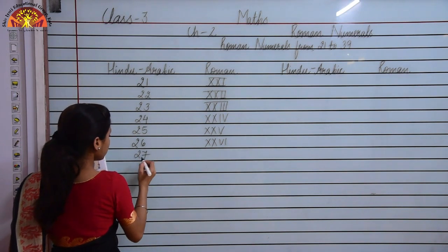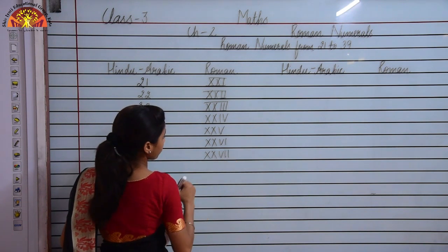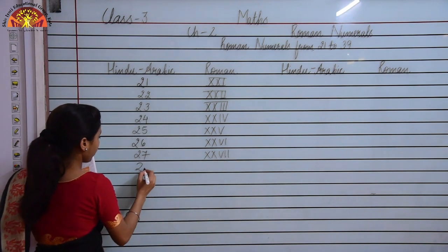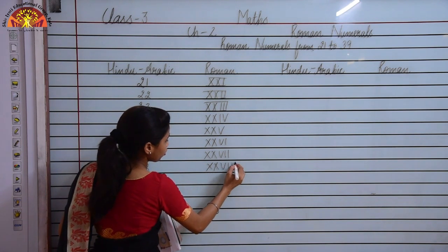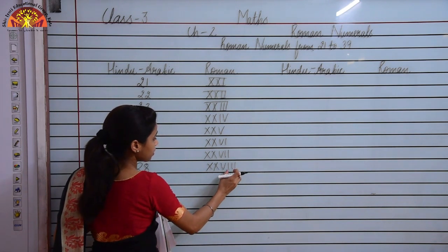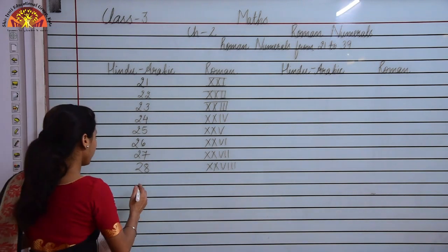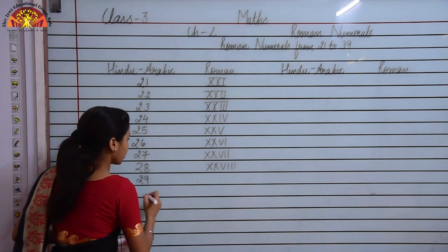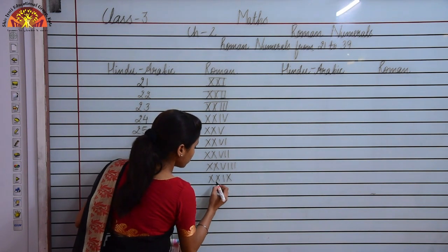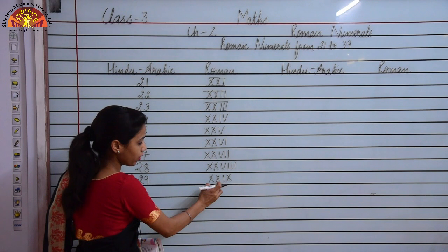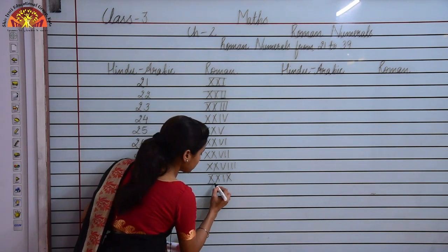To write 27 I will write XX and then add VII to it. To write 28 I will write XX and then add VIII to it — 10 plus 10 plus 8, that is 28. Now to write 29 I will write XX and then add IX to it. This represents 10 plus 10, which is 20, and IX represents 9, so 20 plus 9 is 29.